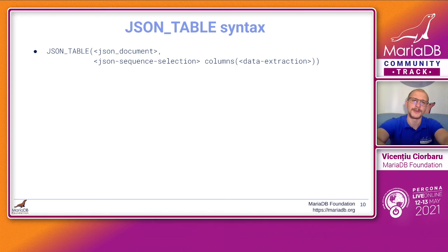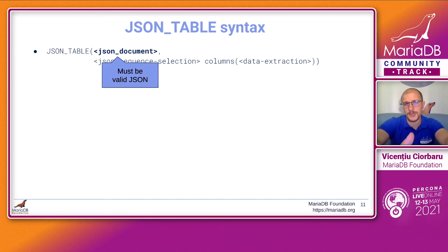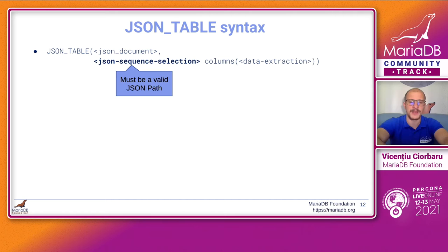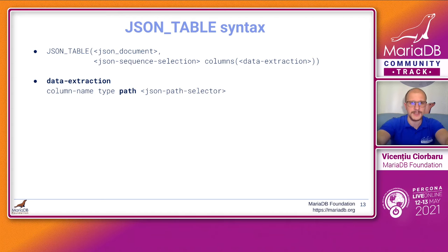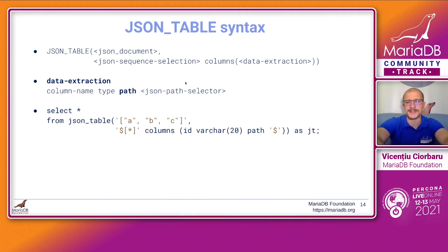Now let's start with JSON Table syntax. JSON Table first takes a JSON document, and the second argument is actually two arguments: one is a sequence selection, and one is the columns. The JSON document needs to be valid JSON, because it's where we extract the data to create a table. The sequence selection tells JSON Table how to use the JSON document to produce a sequence of values. The columns are generated by giving them each a name, then a type — types are part of the SQL set of types — then the keyword path, and then a path selector. The path selector tells, for the current column, how to get that data.